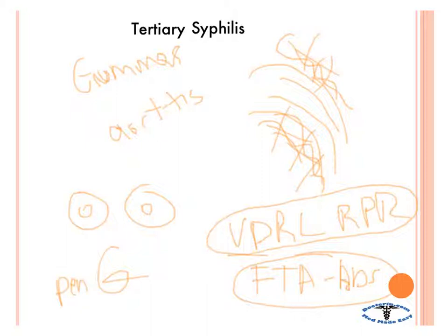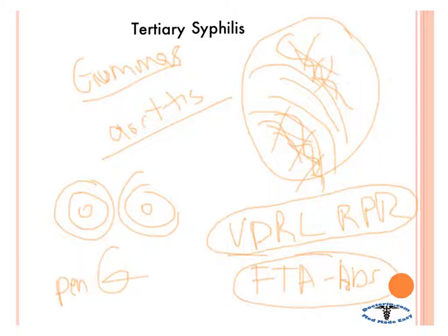So to summarize: gummas are a granulomatous reaction; aortitis occurs because of destruction of the vasa vasorum; you get Argyll Robertson pupil. Screen with VDRL and RPR, use FTA-ABS to confirm, and treat with penicillin G.